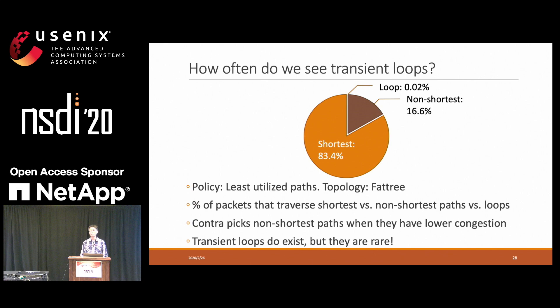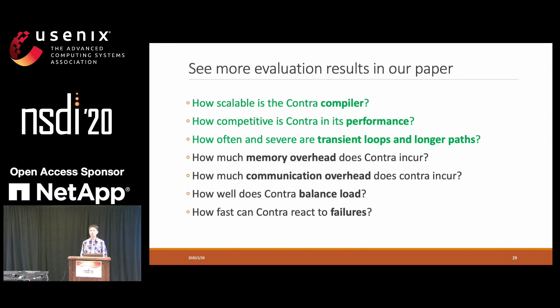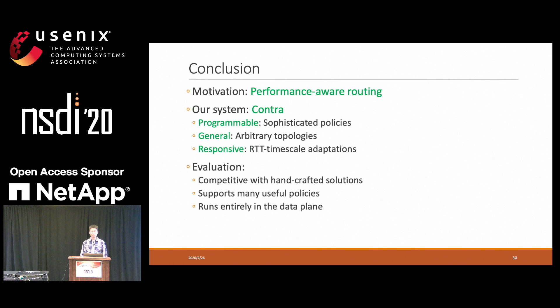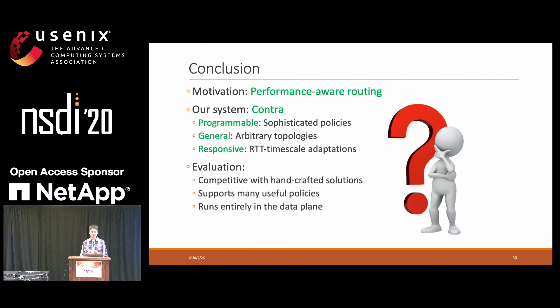I have shown you three experiments. You can find more interesting results in our paper. In conclusion, I have introduced the motivation of performance-aware routing and how Contra addresses those goals. Contra is programmable, general, and responsive. Our evaluation shows that Contra is competitive with handcrafted solutions and can support many useful policies. The generated protocol can run entirely in the data plane. Thank you for your attention. I am happy to take any questions.